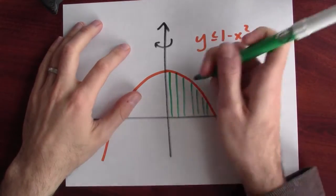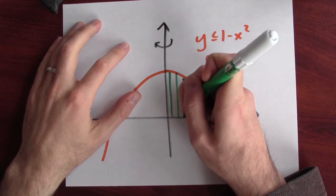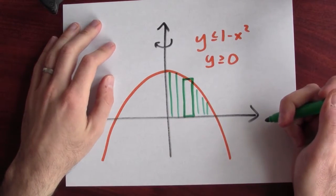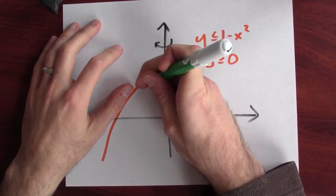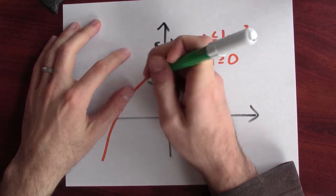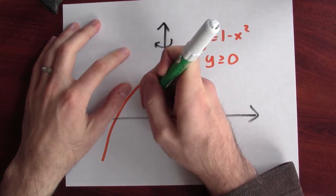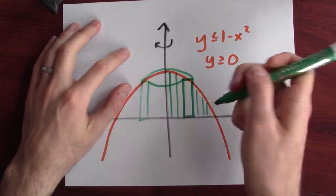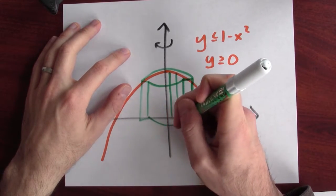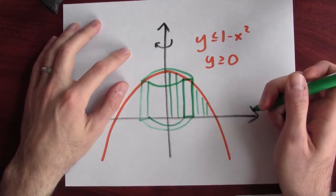Now we're going to use the formula for the volume of a shell. Let's just look at one of those shells. So here's one of these thin rectangles. Imagine rotating this thin rectangle around the y-axis to produce this shell.